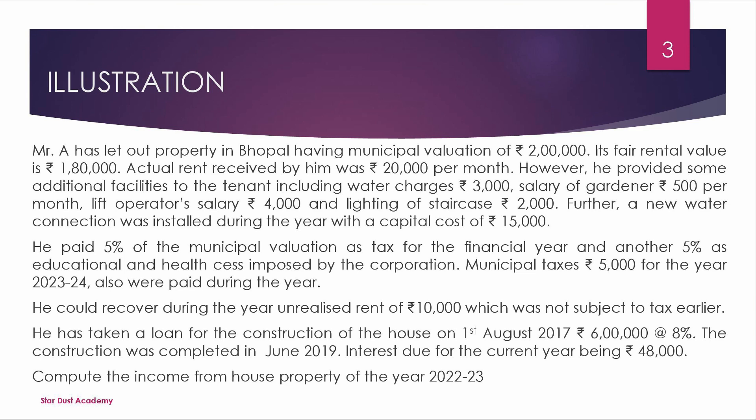Mr. A has let out property in Bhopal having municipal valuation of 2 lakhs. Its fair rent value is 1,80,000. The actual rent received by him was 20,000 per month. However, he provided some additional facilities to the tenant, including water charges 3,000, salary of gardener 500 per month, lift operator salary 4,000, and lighting of staircase 2,000. A new water connection was installed during the year with a capital cost of 15,000.